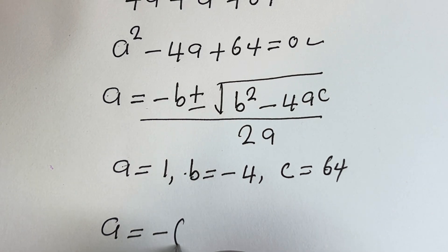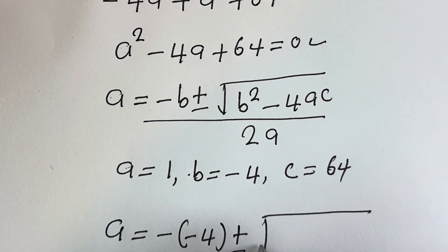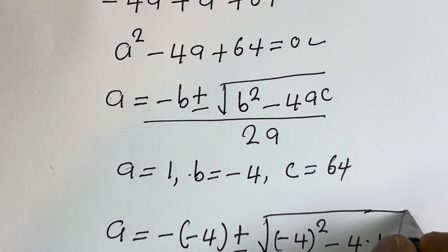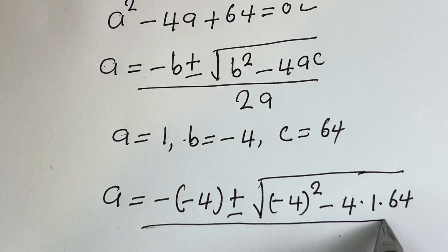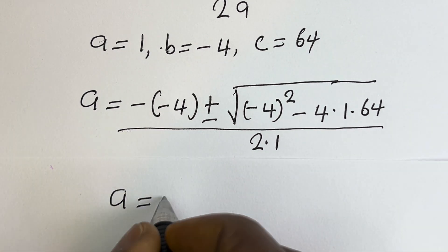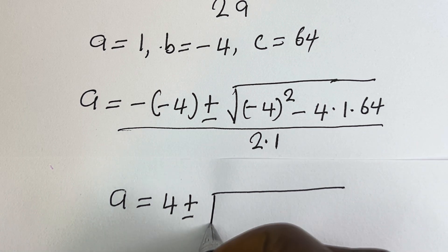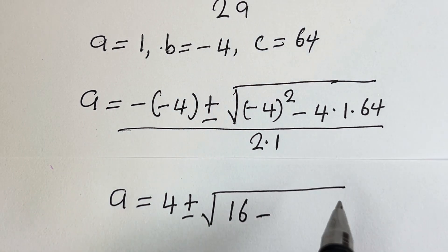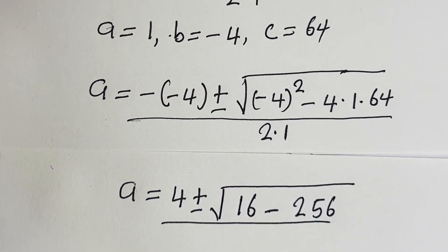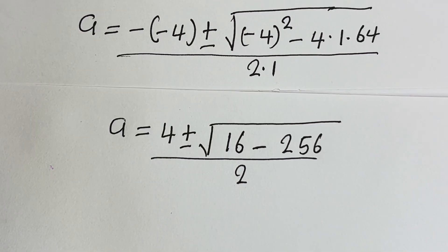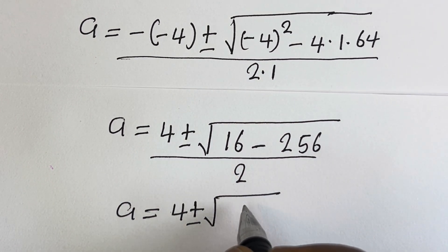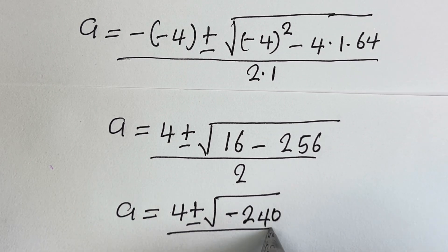Substituting: a equals negative (minus 4), plus or minus square root of (minus 4) squared minus 4 times 1 times 64, all divided by 2 times 1. This gives us 4 plus or minus square root of 16 minus 256, which is square root of minus 240, divided by 2.